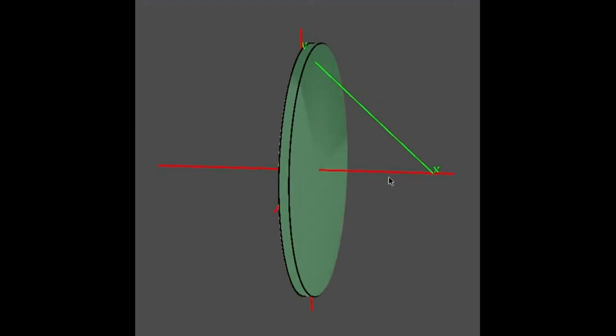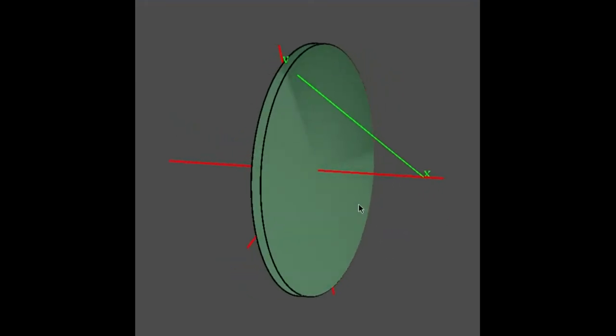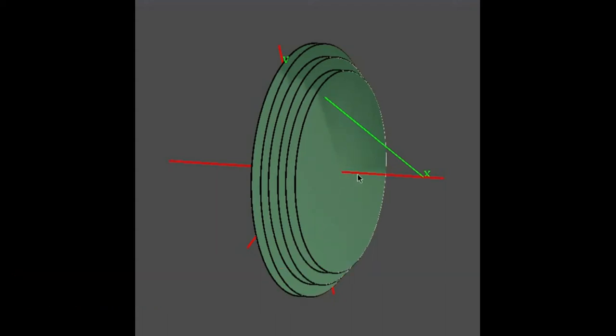When you take that piece and revolve it around, it marks out a disc or a cylinder of very small height. We get this very thin cylinder, and then we're going to add another one on top, and then add another.